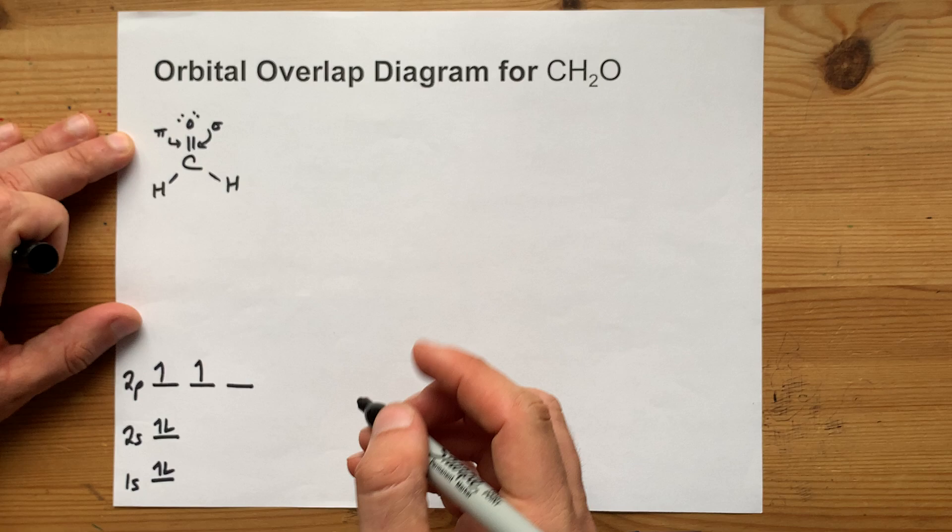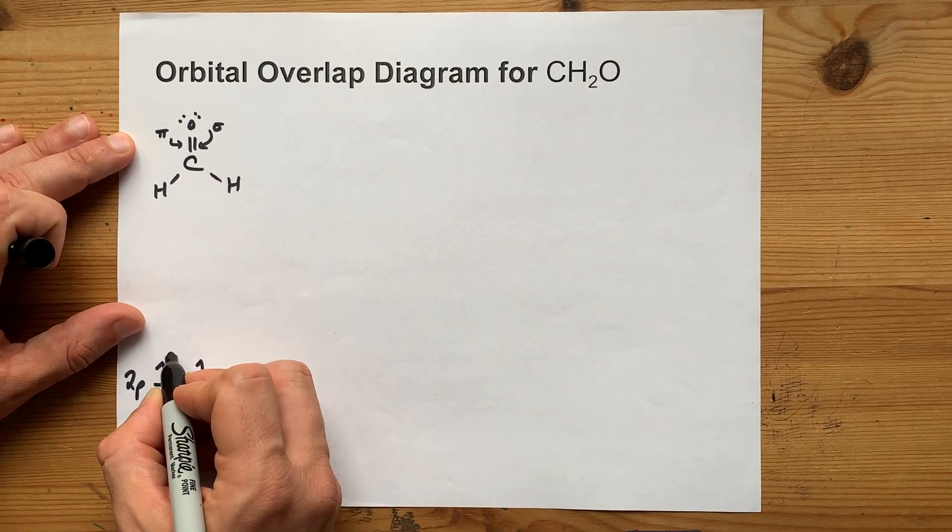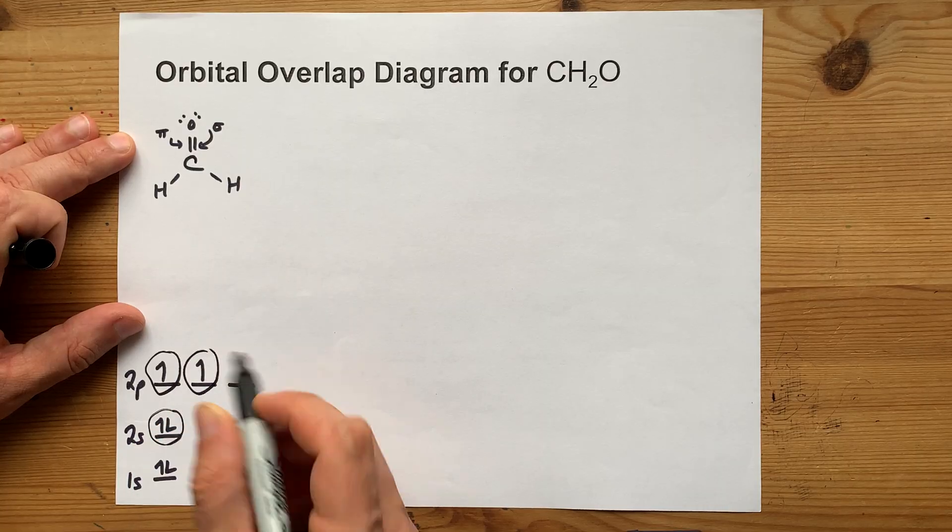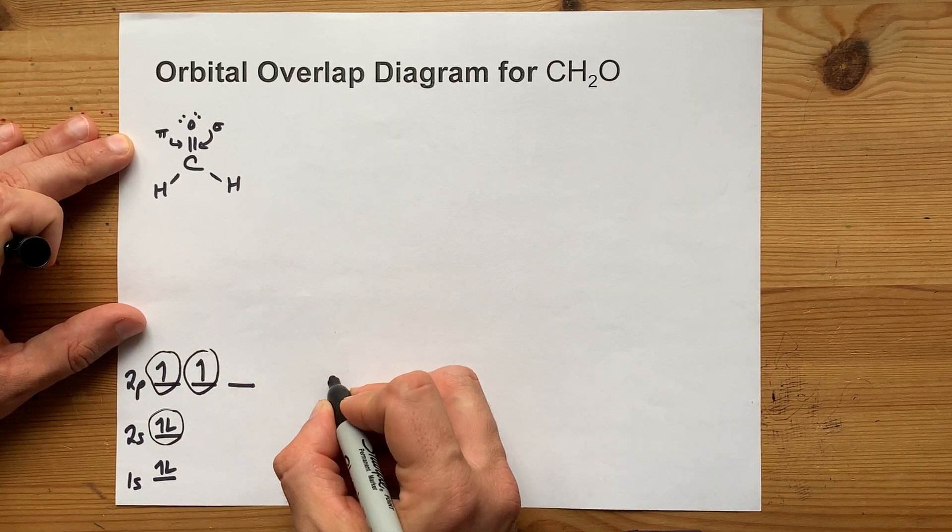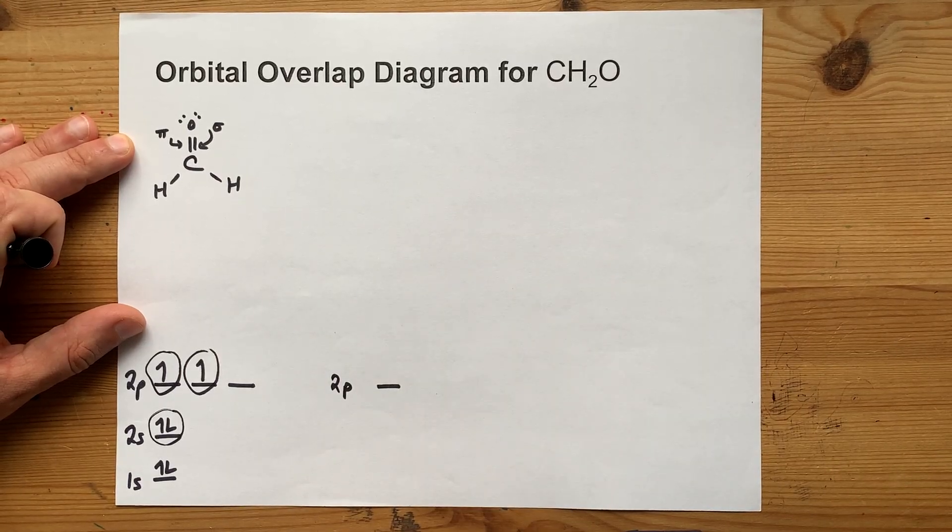The answer is you combine the 2s along with two of the 2p's, and you leave one of the 2p's unhybridized. That's what lets you form a single pi bond.